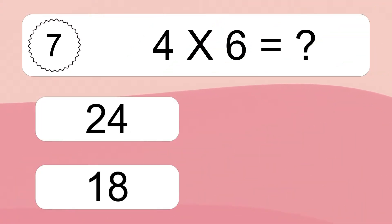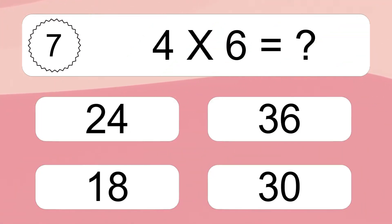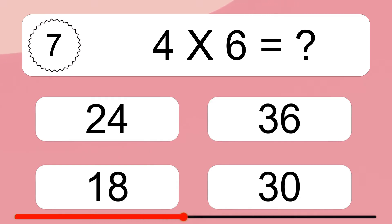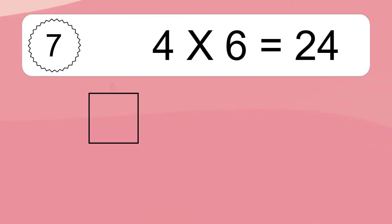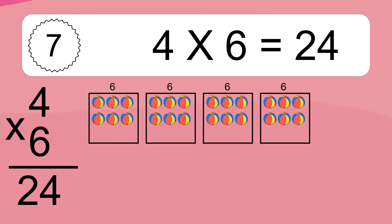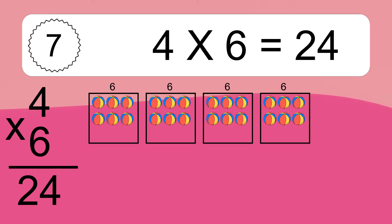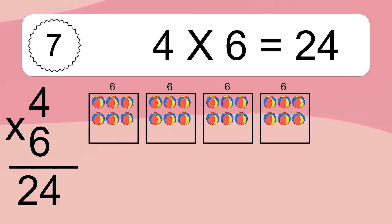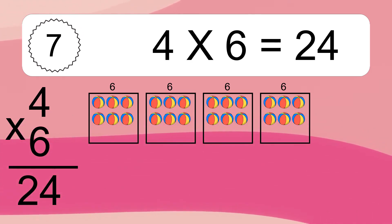Four times six equals what? Four times six equals twenty-four. We have four boxes, and each box has six colorful balls inside. If you count all the balls in all the boxes together, you will have four times six balls. This equals twenty-four balls.